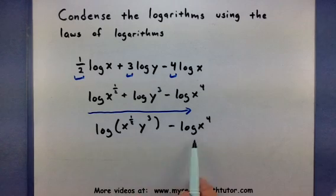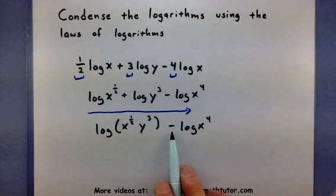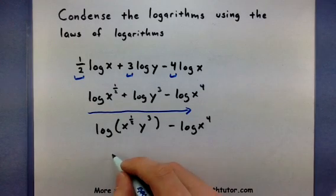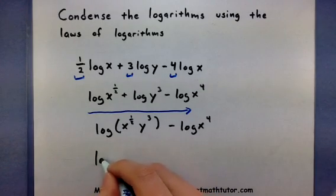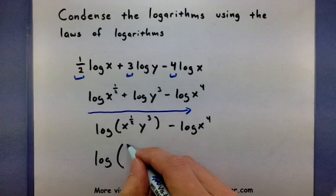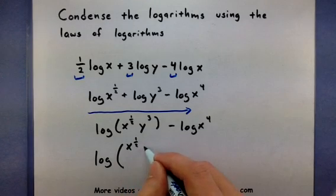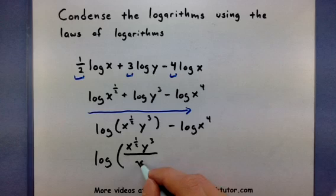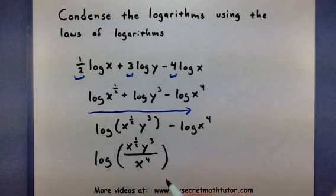And now that brings us down to just two logs. And I can combine those using the quotient rule because they're being subtracted. This will make it log of x to the 1 half, y to the 3rd, all being divided by x to the 4th.